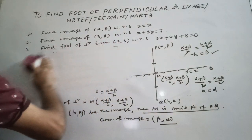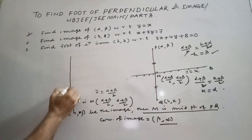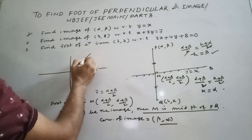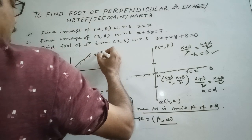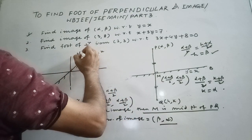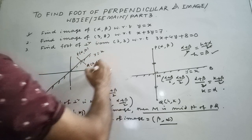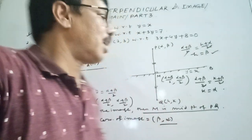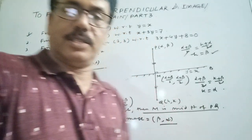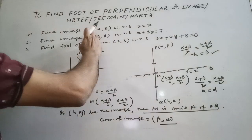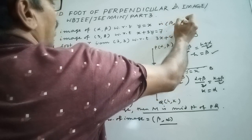If we draw the actual figure, this is y = x. If the point is (α, β), then the image will be Q(β, α). So you are simply interchanging the x-coordinate and y-coordinate to get the image. The image of (α, β) with respect to y = x is (β, α).